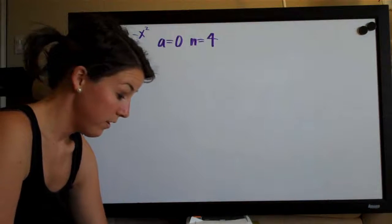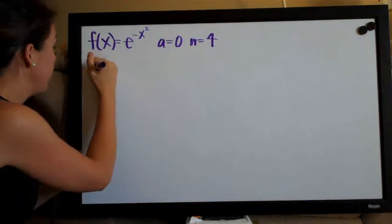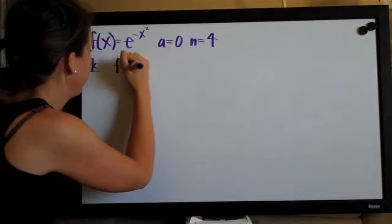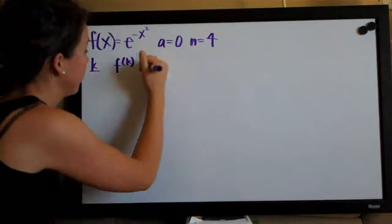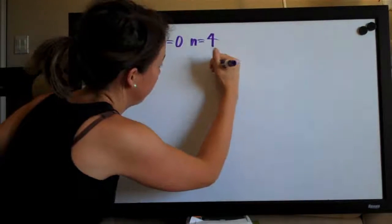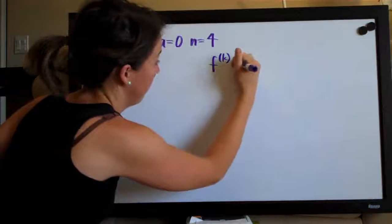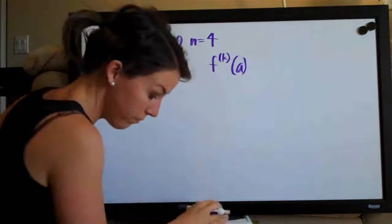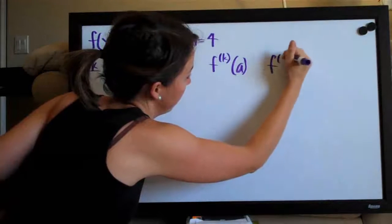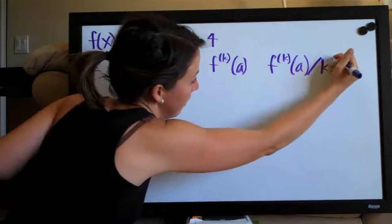The table is going to have four columns. The first column is k, the second column is f^k of x, the third one is f^k of a, and the fourth one is f^k of a divided by k factorial.